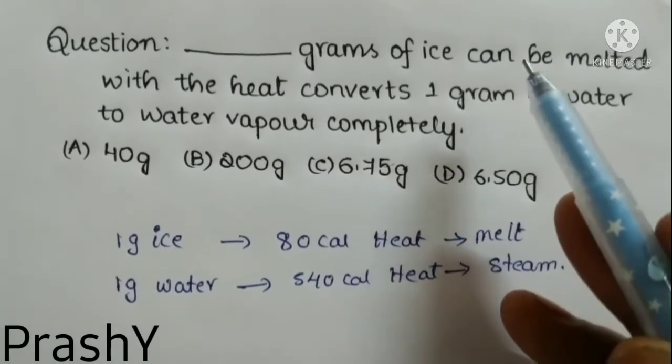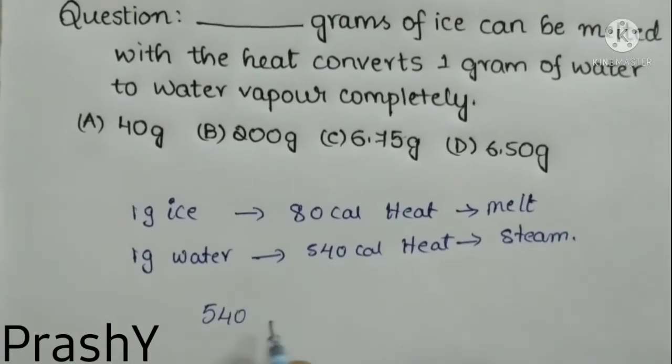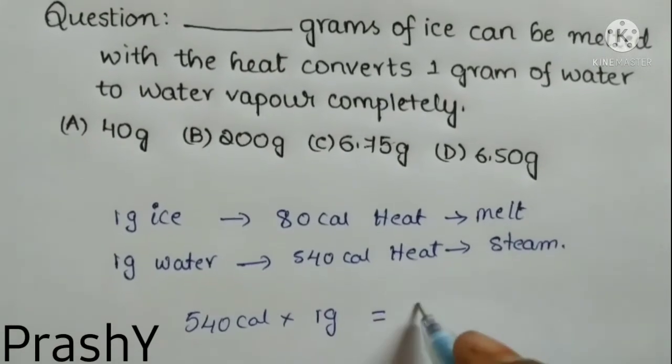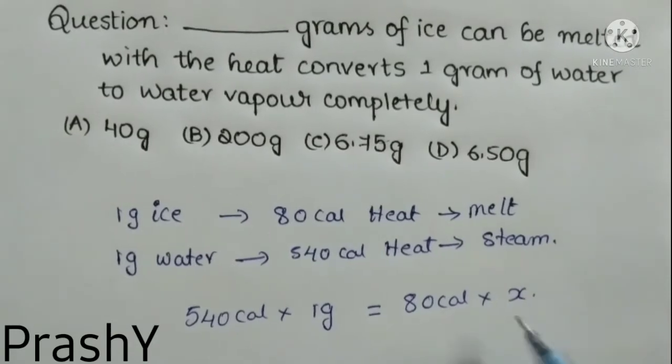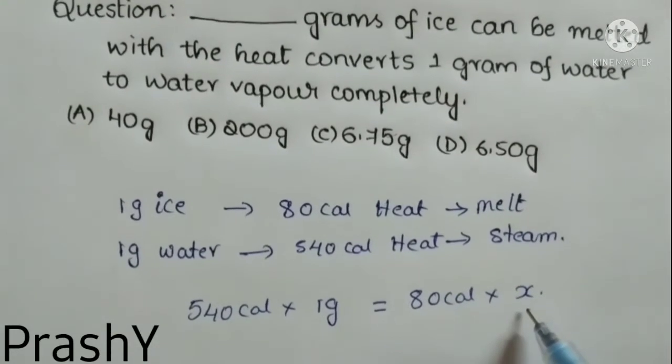From the question, it is understood that the heat required to convert 1 gram of water to steam is equal to the heat required to convert X grams of ice into water. So now we have to find the value of X.